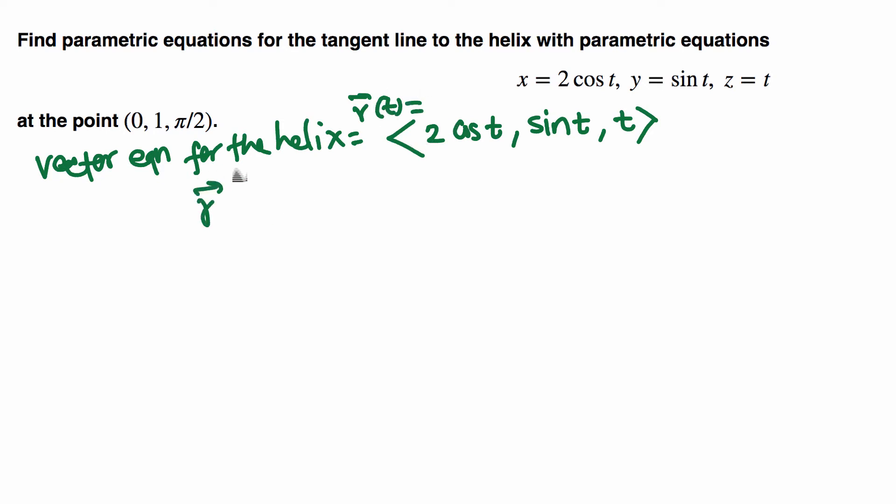Let's find its derivative which is ⟨-2 sin t, cos t, 1⟩. Now we need to find the parameter value at this point.